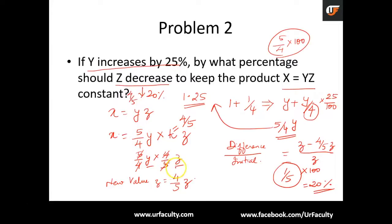There is not much complexity. We just did a reciprocal of 5 by 4, we made 4 by 5. And 4 by 5, what we did was we tried to find what is the difference. We need to find out the percentage change. Earlier it was Z, and now it is 4 by 5Z. So we found out the percentage difference by calculating difference by initial into 100. That will give you the percentage value.